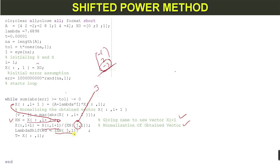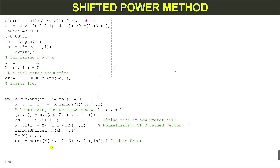Next, the normalized vector t is set equal to x(i) from the previous iteration. We then check the error in the solution by subtracting the previous vector from the new vector and computing the infinity norm of the difference.